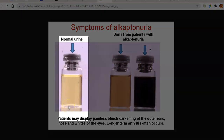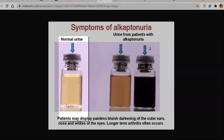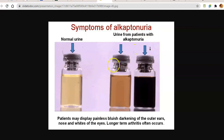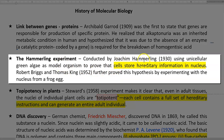The normal person's urine will be light colored, which is due to the presence of a certain enzyme that breaks down the homogentisic acid. Apart from these symptoms, those alkaptonuria patients will also have a painless bluish darkening of their outer ears, nose, and whites of their eyes. These are the other symptoms associated with alkaptonuria patients.